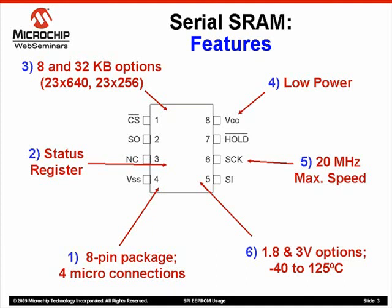We've labeled these parts the 23x640 and 23x256. Fourth, the devices have very low power consumption — typical standby current is 1 microamp at 3 volts, and maximum read current is just 10 milliamps at the maximum speed of 20 megahertz. This makes serial SRAM devices excellent for low power embedded applications. Additionally, the bus allows data rates of up to 20 megahertz for very fast data transfer. Finally, they come in 1.8 and 3 volt options and can operate up to 125 degrees C.